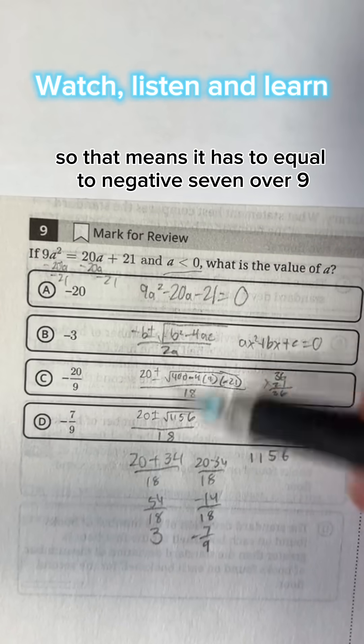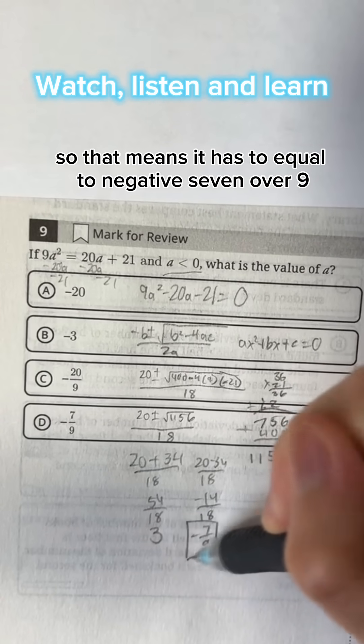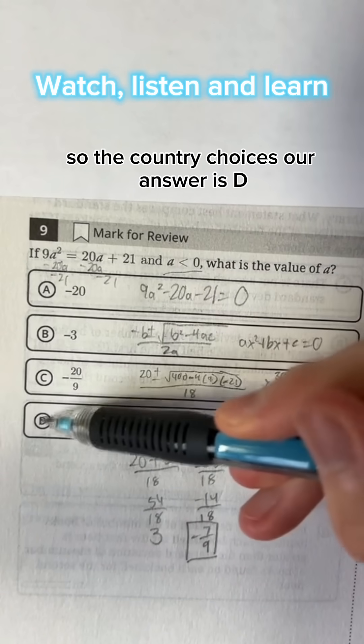And we know that a is less than 0, so that means it equals negative 7 over 9. So if we look at the choices, our answer is D.